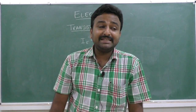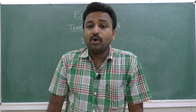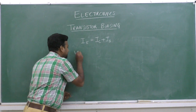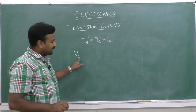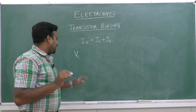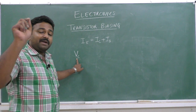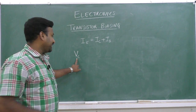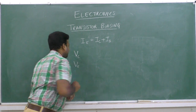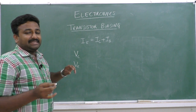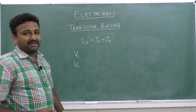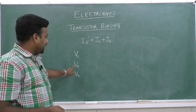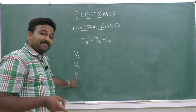A transistor has three terminals. If we measure voltage between the collector region and ground, that voltage is termed VC — collector voltage. If we measure voltage between the emitter and ground, that is VE — emitter voltage. If we measure voltage between the base and ground, that is VB — base voltage.